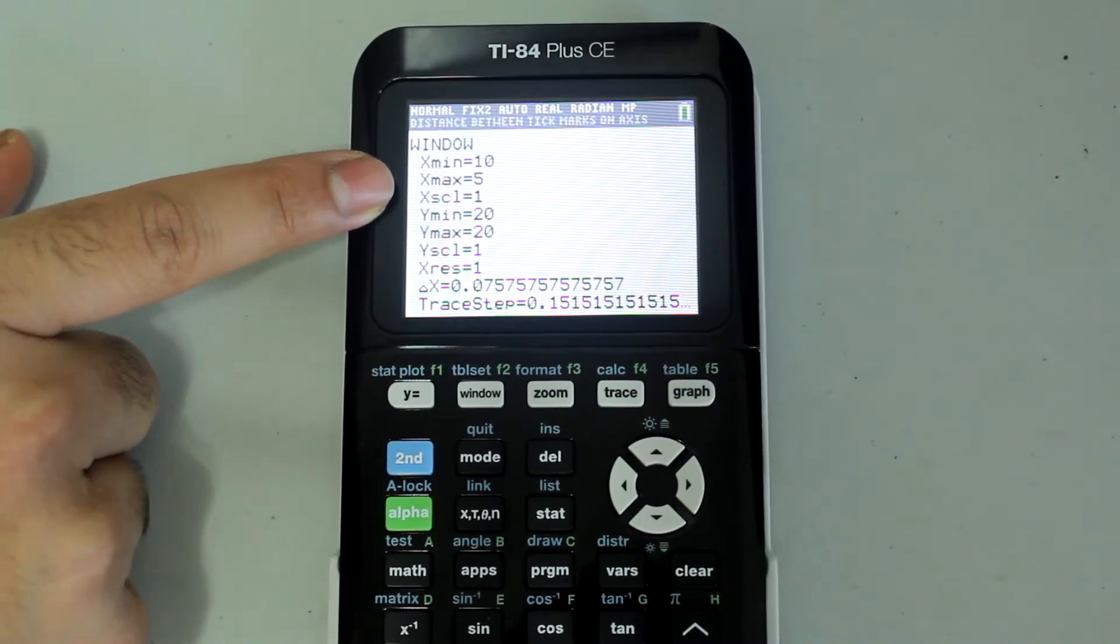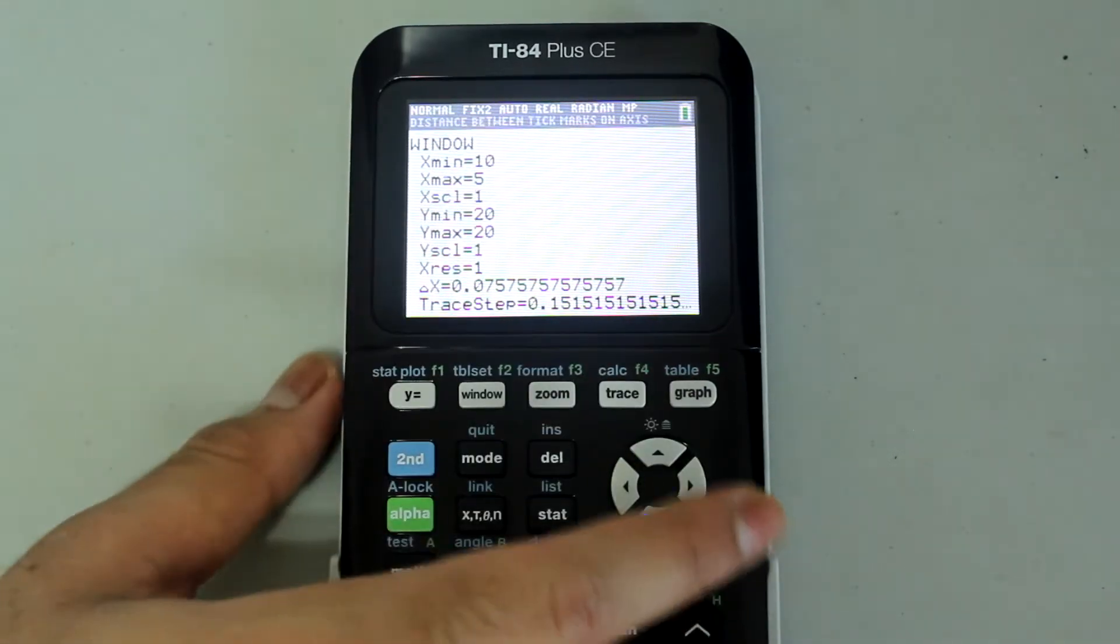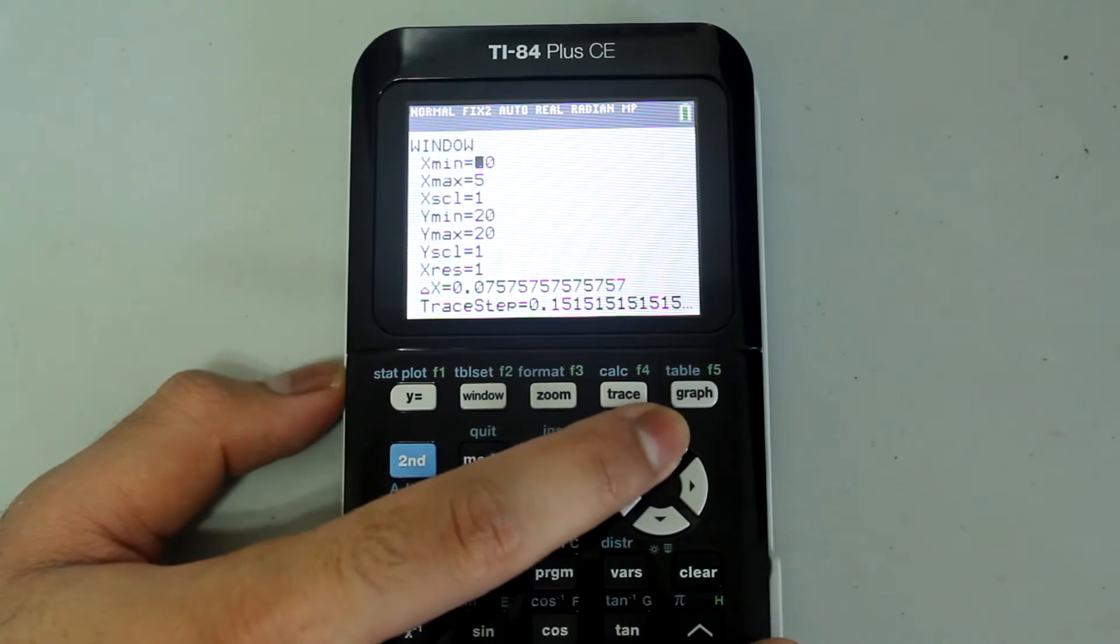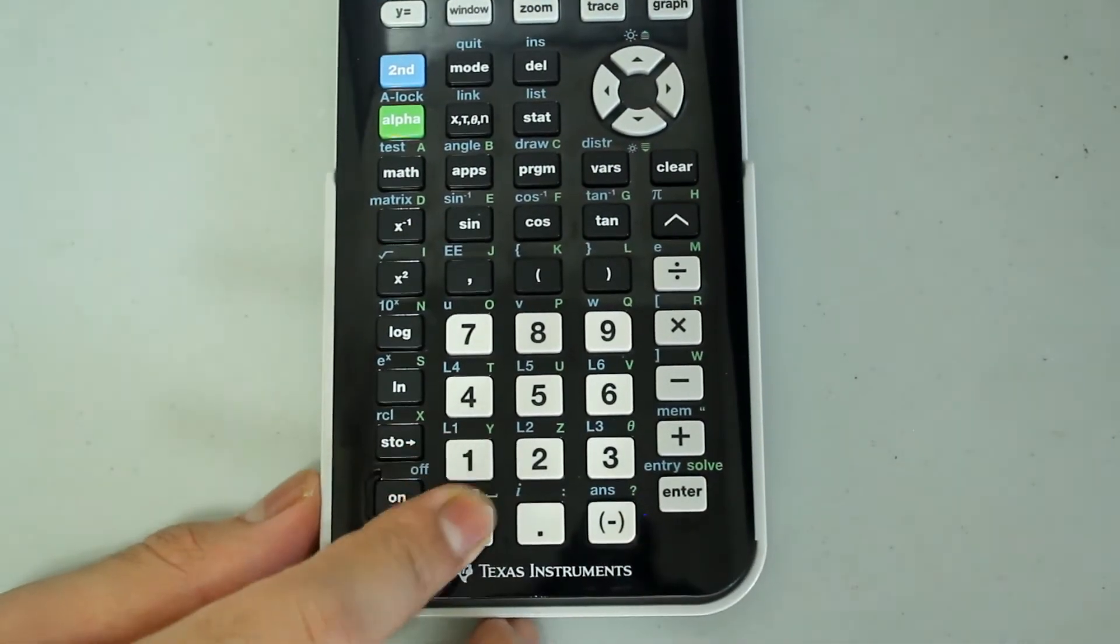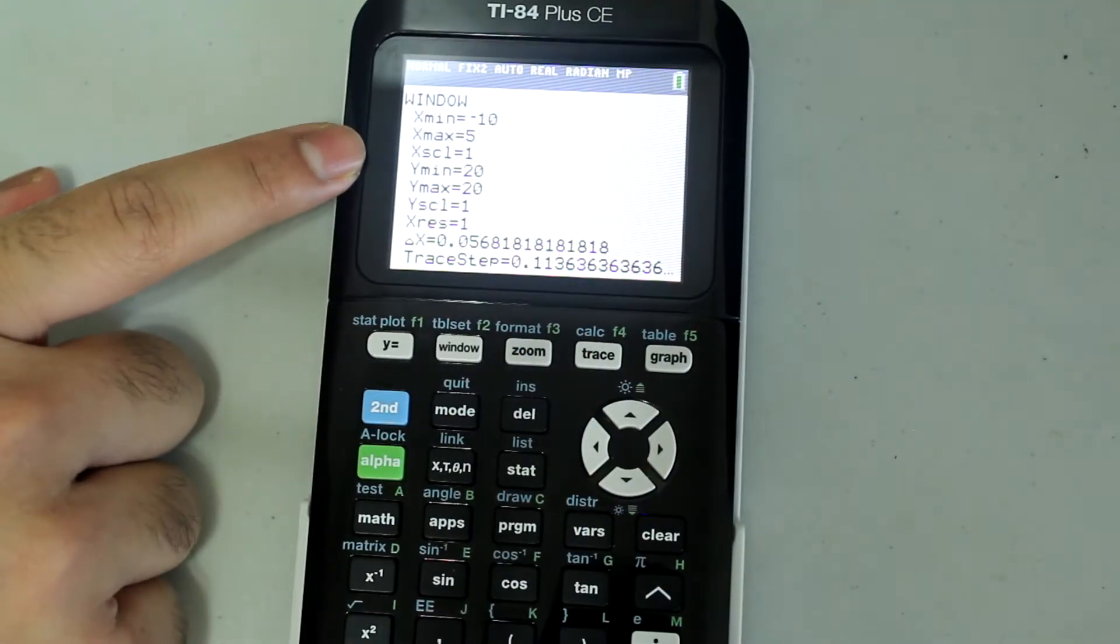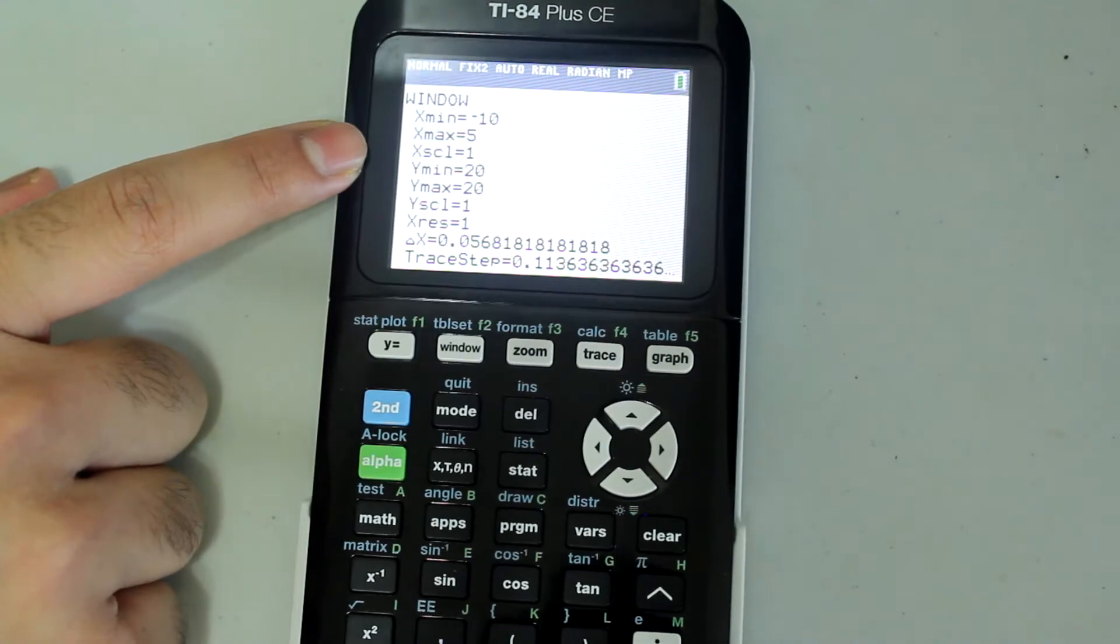I'm going to make my x min negative 10, and I'm just going to make my x max 10. You can adjust it to your liking. So x min, I'm going to make my x max 10.